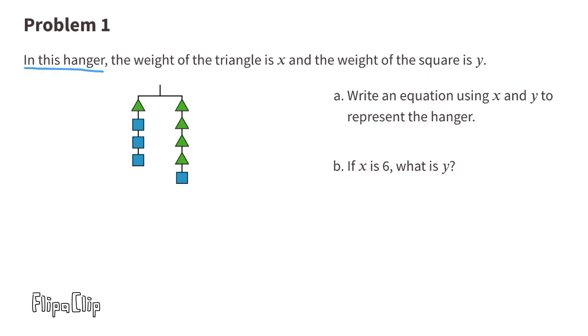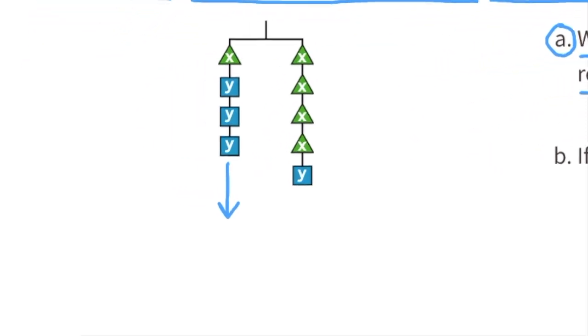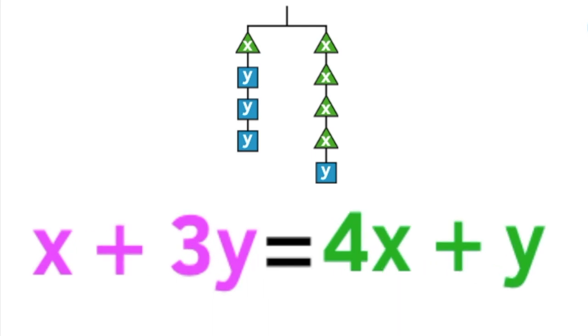Problem number 1. In this hanger, the weight of the triangle is x and the weight of the square is y. A. Write an equation using x and y to represent the hanger. On the left side of the hanger, we have 1x and 3y's, and on the right side of the hanger, we have 4x's and 1y. The equation would read x plus 3y equals 4x plus y.